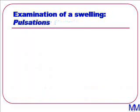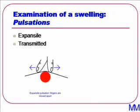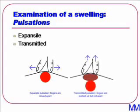Assessing pulsations is often confused, but is actually very simple. All we want to know is: is the lump purely pulsatile, or is it also expansile? When you are palpating an expansile lesion, your two fingers placed either side of it will be moved apart, whereas if it is purely pulsatile because of transmitted pulse, your fingers will not be moved apart at all.